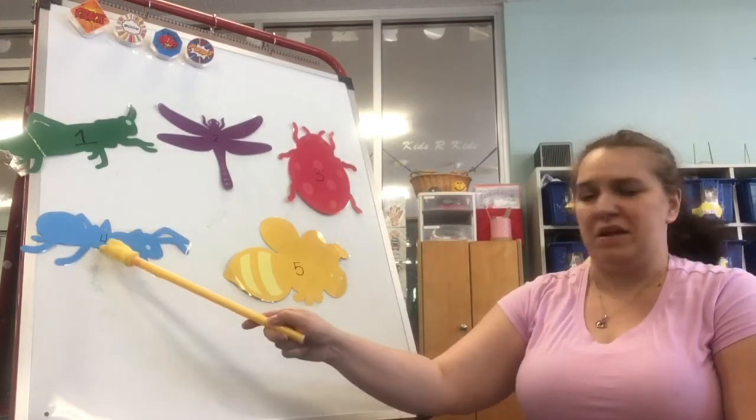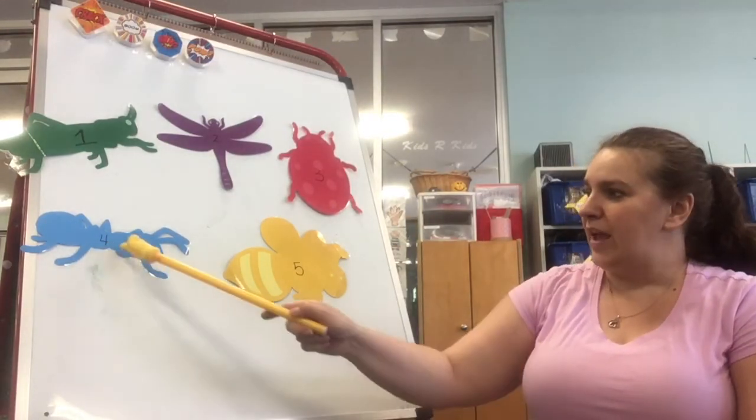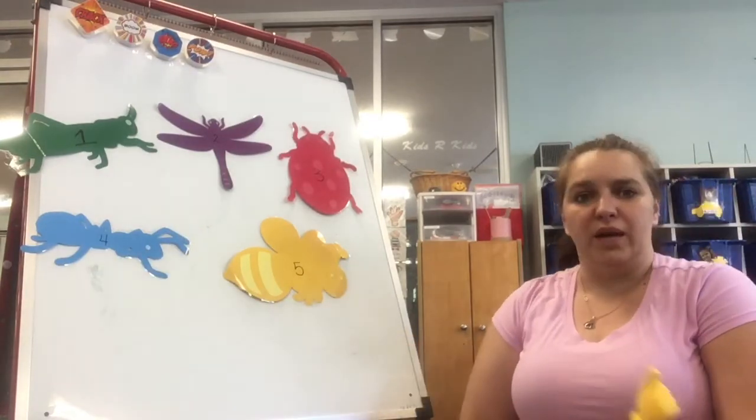Grasshopper, no that's an ant, not a grasshopper. Ant is number four. And Bumblebee is number five.